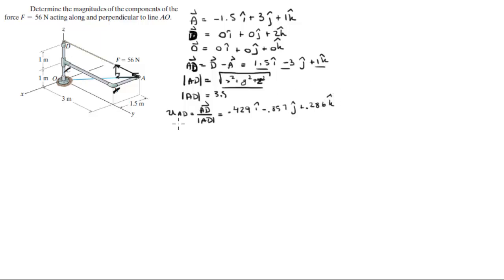Now that you have the unit vector, you can find the Cartesian vector form of F, because you have the magnitude, which is 56N. So the Cartesian vector form is found by multiplying the magnitude by the unit vector going along AD. So multiplying these three values by 56N gives you the Cartesian vector form of F, which is 24I minus 48J plus 16K. So that's the Cartesian vector form of F.